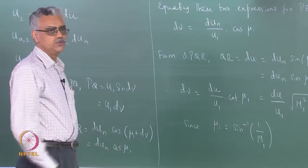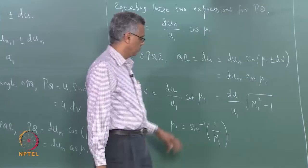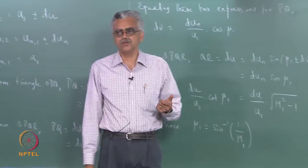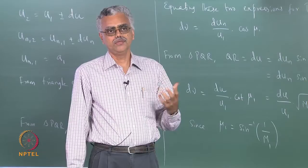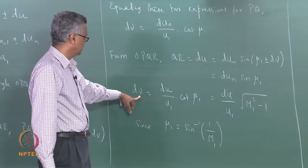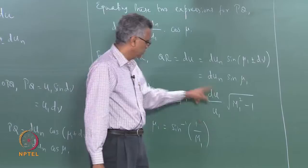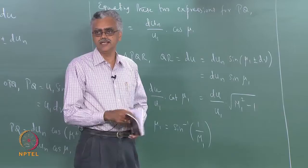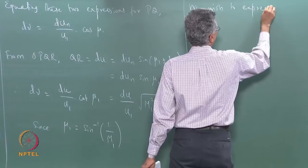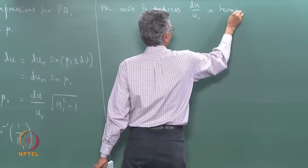What we would like to do with this expression is relate it to M₁ alone, similar to what we did for Rayleigh flow, Fanno flow, normal shock, and quasi-1D flow. The change dν is the change in Prandtl-Meyer angle. We want to relate this to M₁ alone — just as for oblique shock we related θ, β, and M. Since the process is isentropic, we want to rewrite du/u₁ in terms of M₁ alone so we can integrate and get a closed-form relationship.